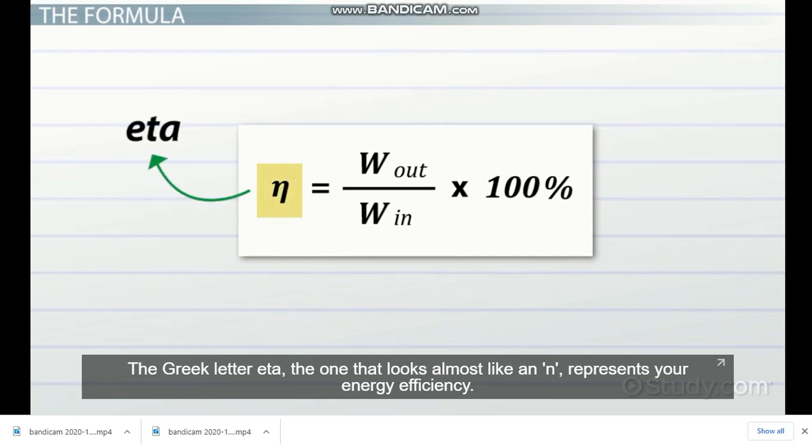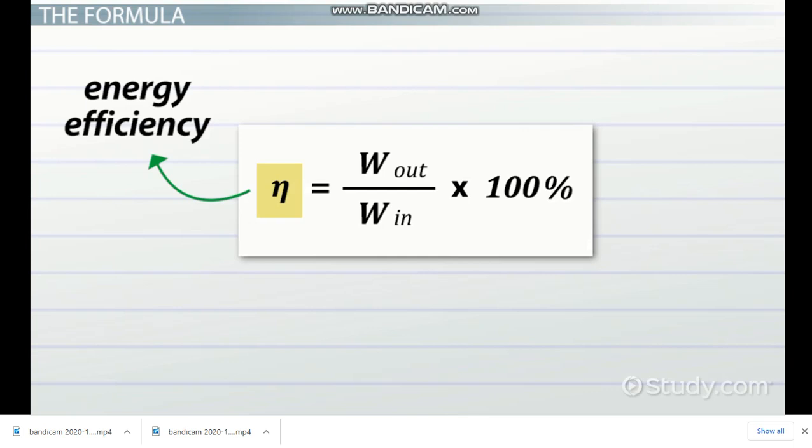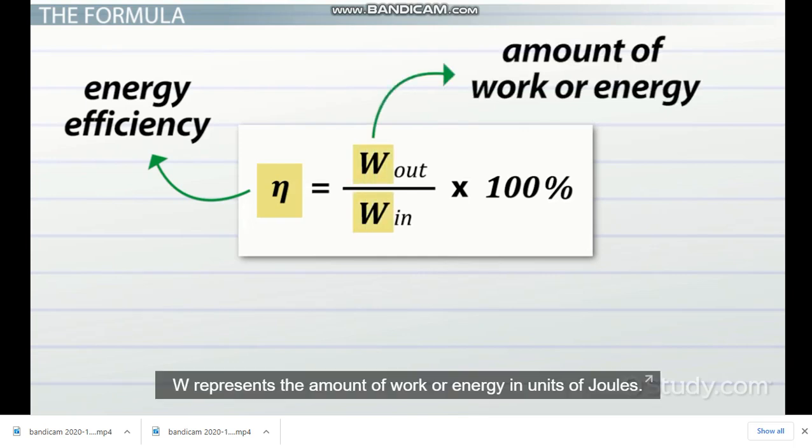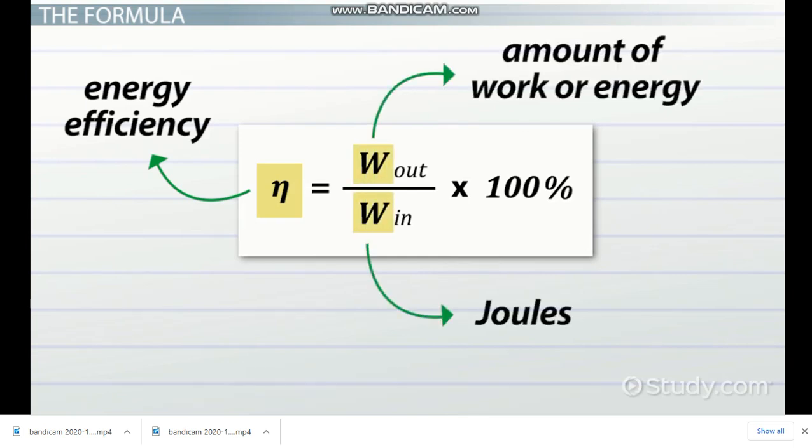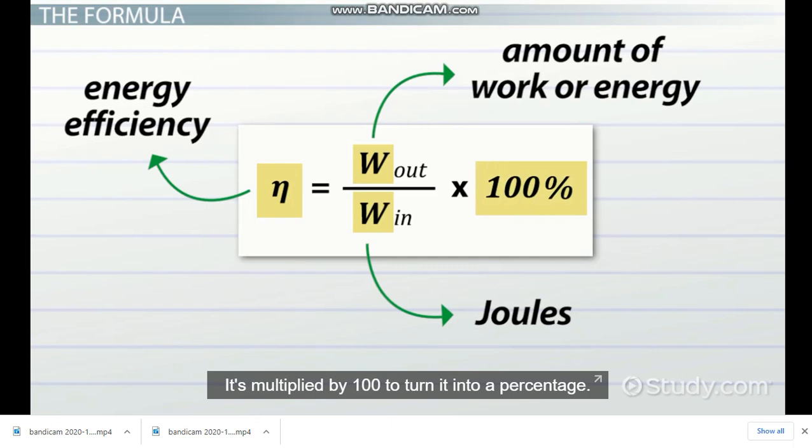The Greek letter eta, the one that looks almost like an N, represents your energy efficiency. W represents the amount of work or energy in units of joules. It's multiplied by 100 to turn it into a percentage.